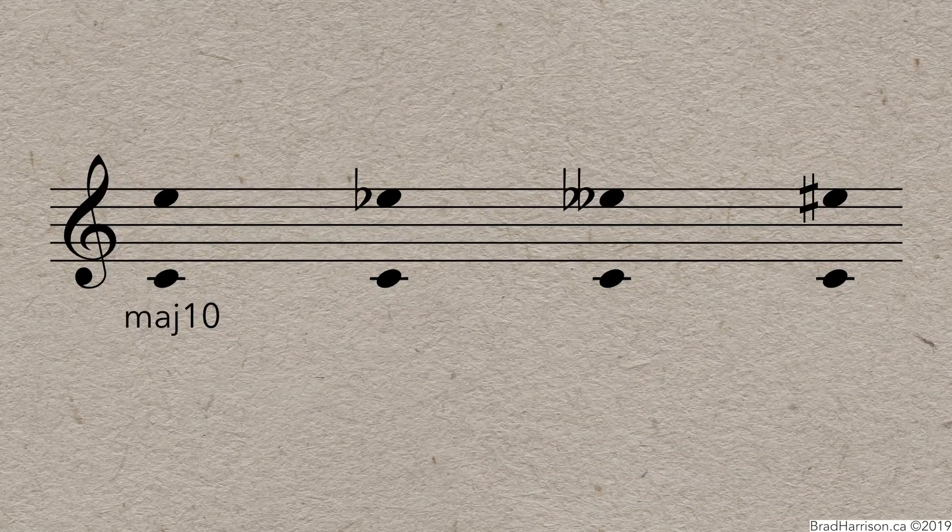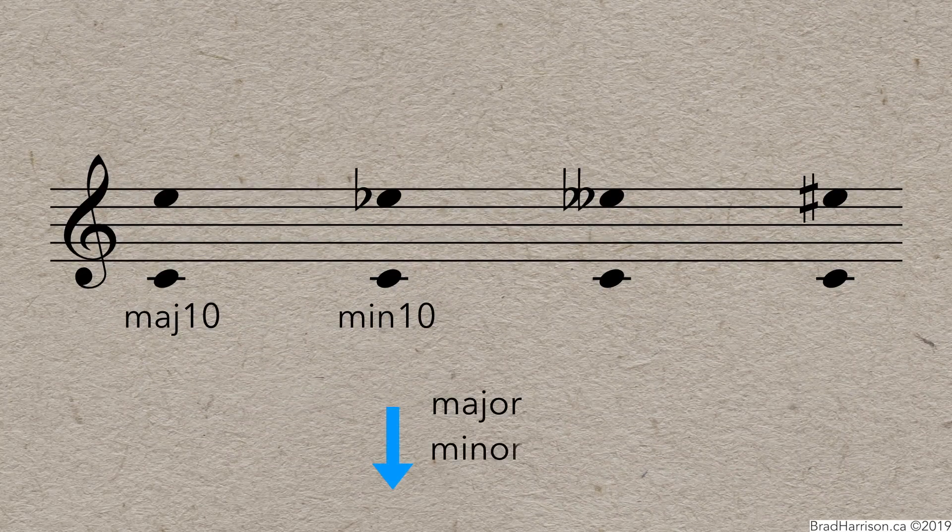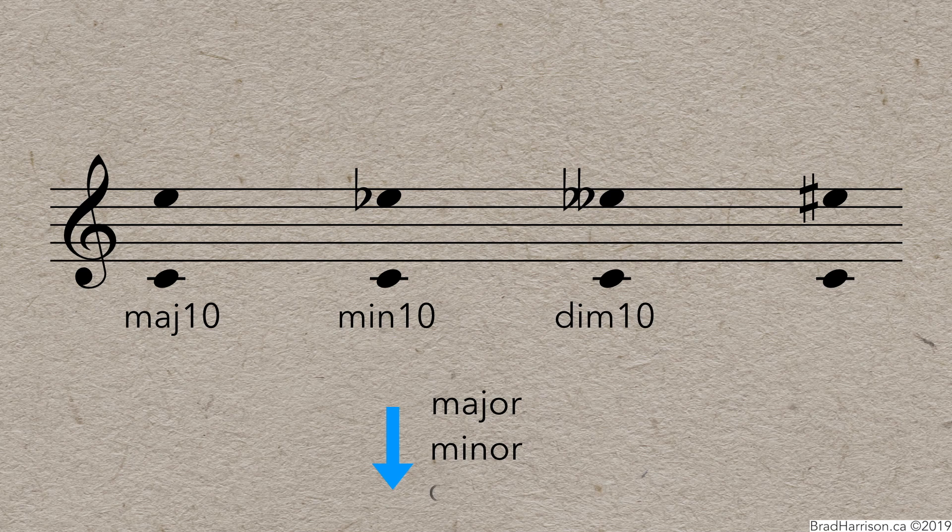And, just like the simple intervals, any major interval that's made one semitone smaller becomes minor. Two semitones smaller is diminished. And one semitone larger makes the interval augmented.